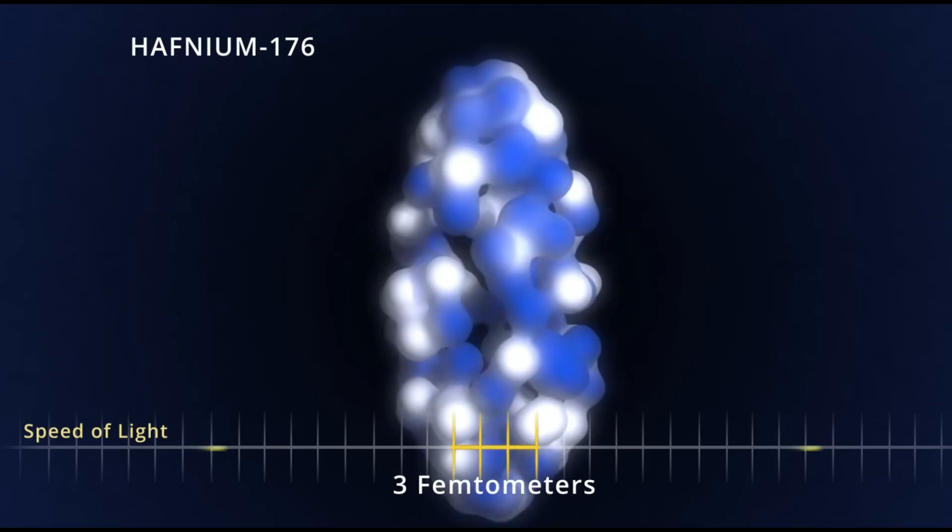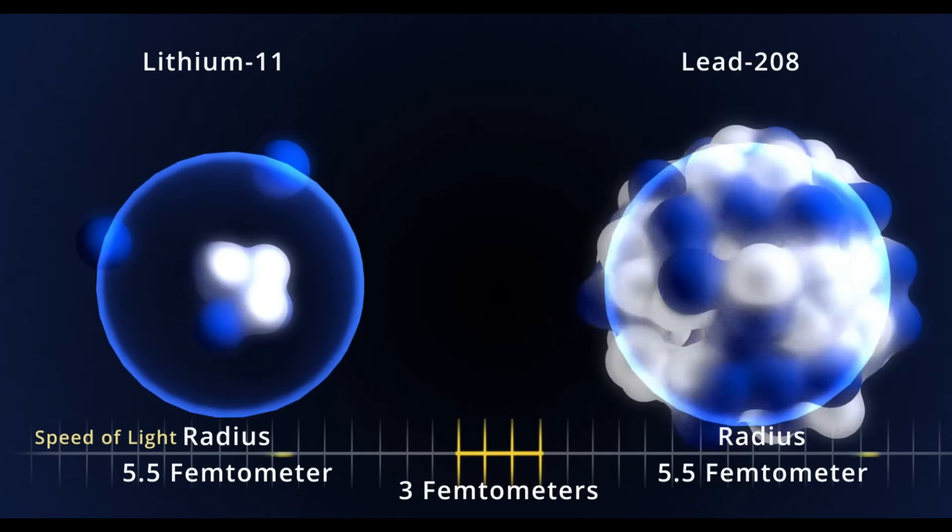Now you can imagine how more and more complicated things get when there's more and more protons and neutrons. Hafnium-176 is like 3 times longer than it is around. And lithium-11 has a halo of valence neutrons around it, making its nucleus about the same size as lead-208. Link to this amazing video by MIT in the description as well.